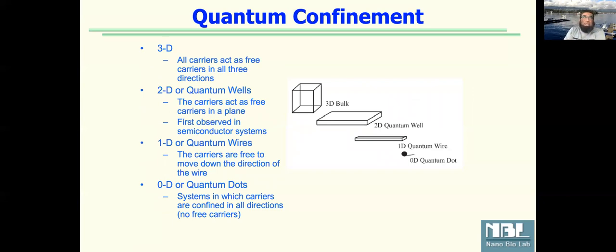1D is a wire, a long thing like carbon nanotubes. 2D would be a kind of a sheet, and 3D would be bulk, something that has volume. But in all these four dimensions, we can make them so small that we start interfering with the behavior of electrons. Now I said zero dimension quantum dots. There are two conditions.